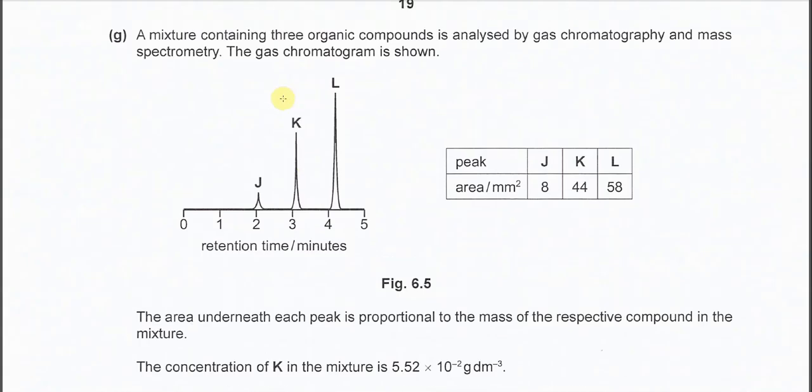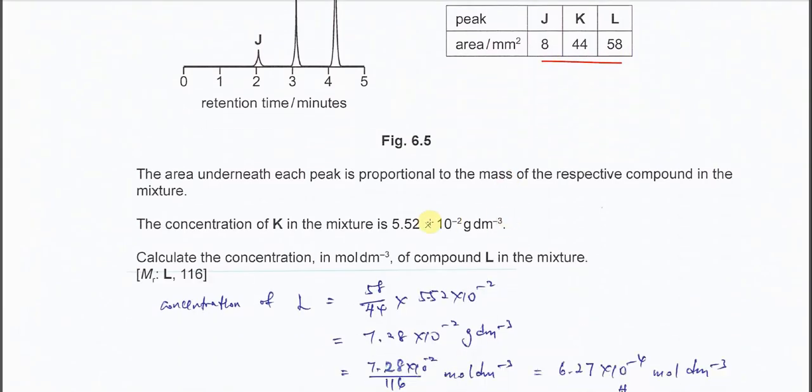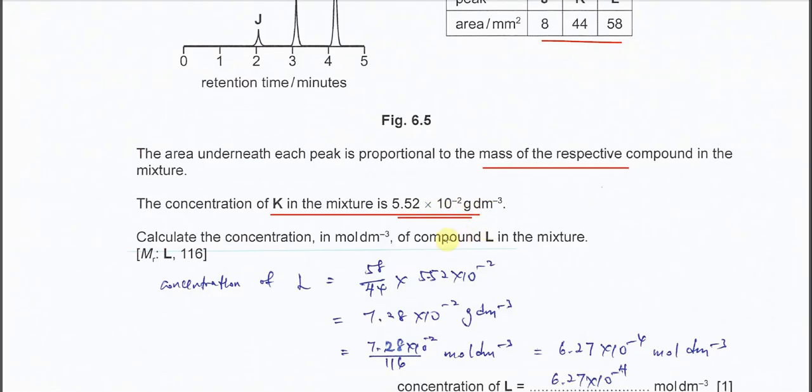Part G. We have a partial chromatogram from gas chromatography and mass spectrometry. The gas chromatogram is shown here with three compounds JKL, and the area of JKL is in this table. The area under each peak is proportional to the mass of respective compound in the mixture. The concentration of K in the mixture is 5.52 × 10^-2 g/dm³. Using these values, calculate the concentration in mol/dm³ of L.